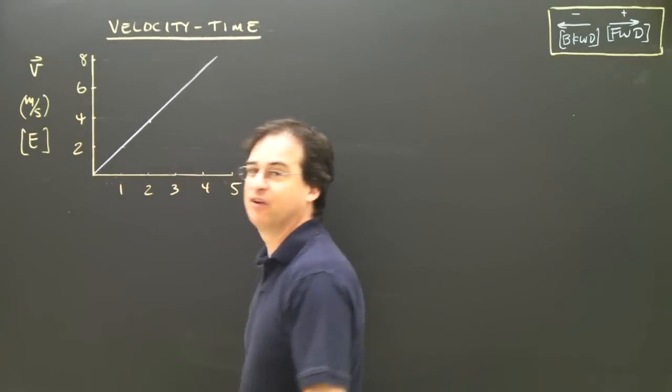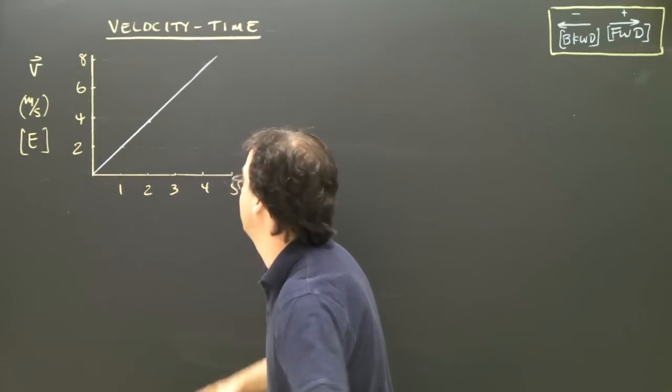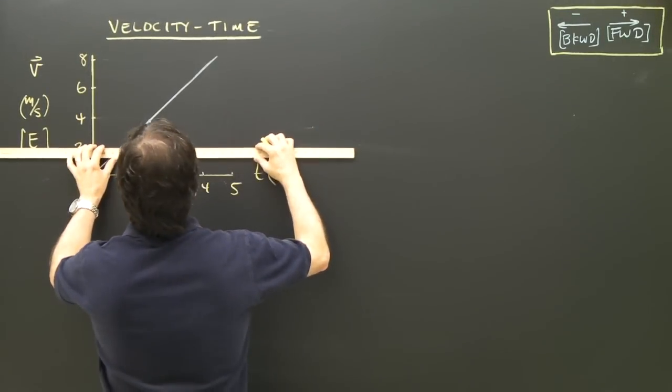So let's take a look at this graph, and I want to find the slope and see what that gives us. To find the slope, we've got to create a triangle. So I'm going to do that.